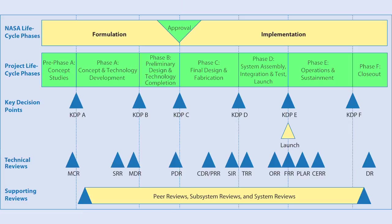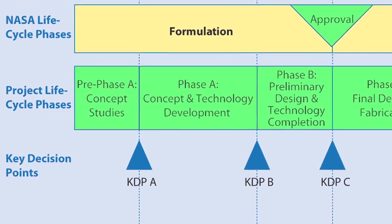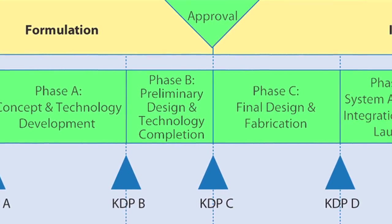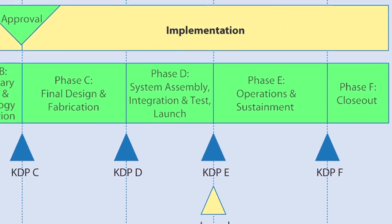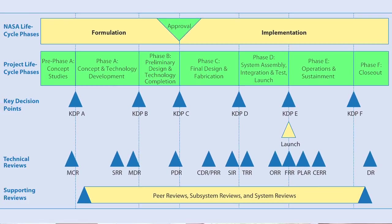Going down the columns of this chart, there are different phases defined — pre-phase A all the way through phase F. Phase F is when the system is done with its operations, has met its objectives, and you're going to retire it. So it's a life cycle starting with the concept and ending with the retirement of the system after it has completed all of its operational objectives.